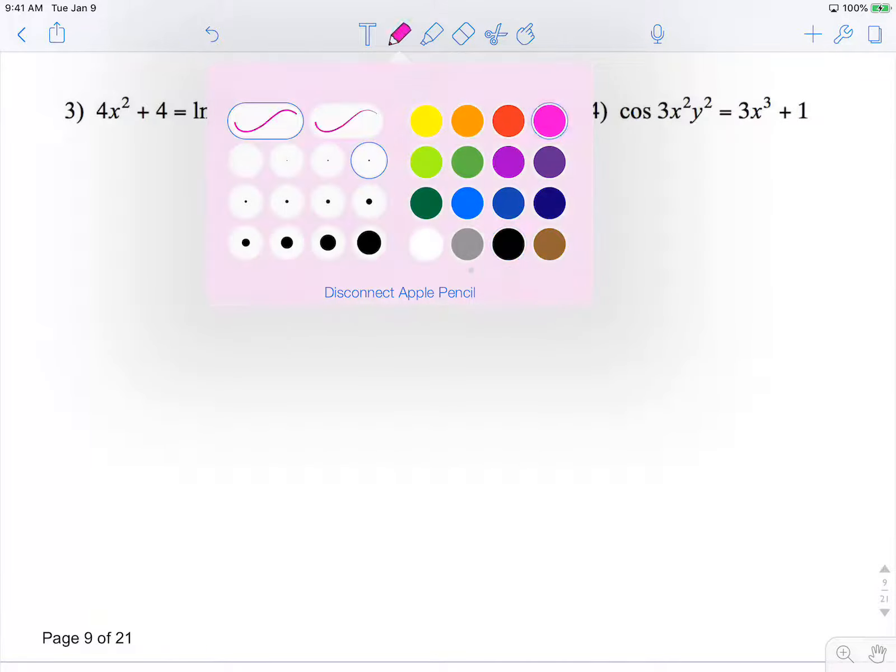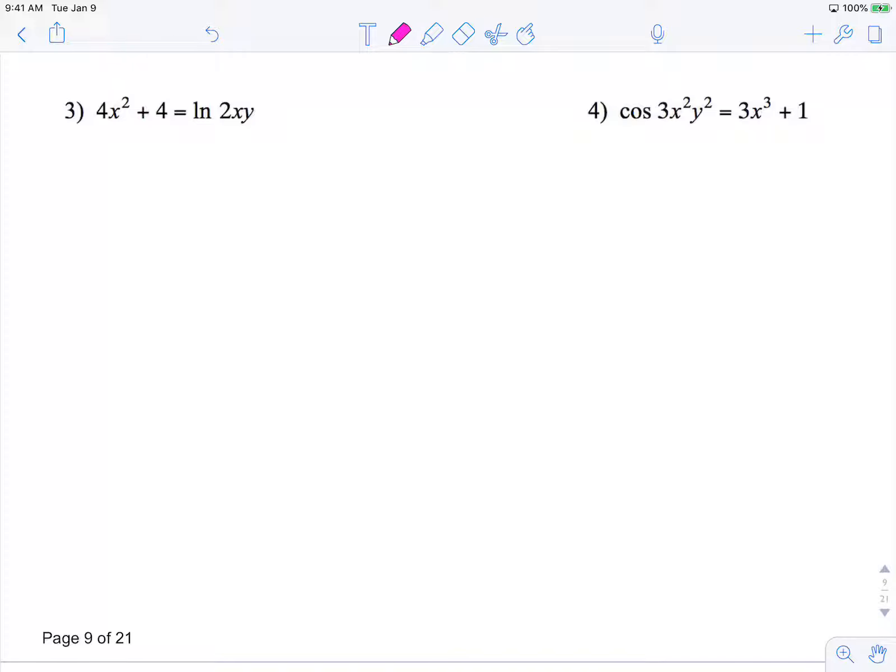Let's keep it going. The derivative of 4x² is 8x, the derivative of 4 is 0. Here I see a composition of functions. My outer function is ln, its derivative is 1 over whatever is inside of it.